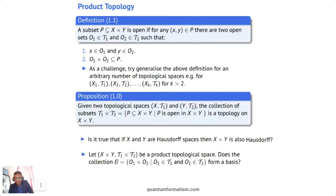Another question is whether this collection — defined as all O1 × O2 where O1 is in T1 and O2 is in T2 — forms a basis for the product topology.